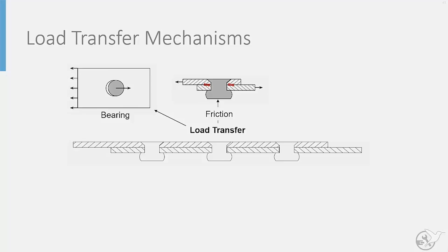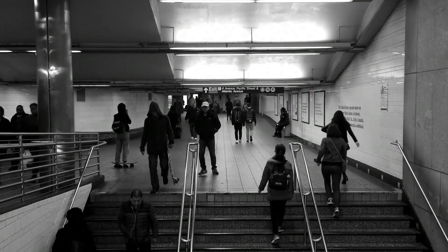Finally, load that is not immediately transferred by the first row of fasteners flows around that row of fasteners to be transferred by later rows. This latter load is known as the bypass load and is analogous to the flow of people on a subway platform looking for the most efficient exit.